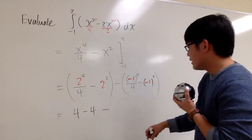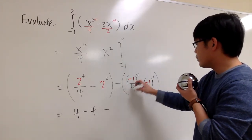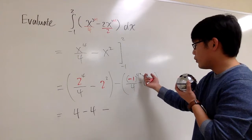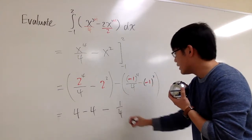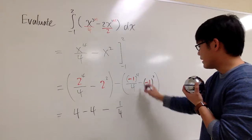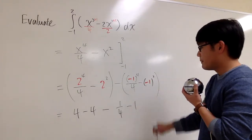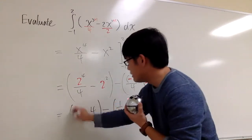And we have minus. And this is negative 1 to the fourth power, which is just 1. 1 over 4. So you have 1 fourth. And this is 1. But this is minus 1, right? And technically, I still have the parentheses like that.